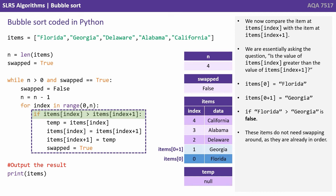We now compare the item at items[index] with the item at items[index+1]. We're essentially asking: is the value held in items[index] greater than the value held in items[index+1]? items[index] is 0, and that's Florida. items[index+1], 0 plus 1, is Georgia. Is Florida greater than Georgia? That's false — these items do not need swapping, they're already in order.